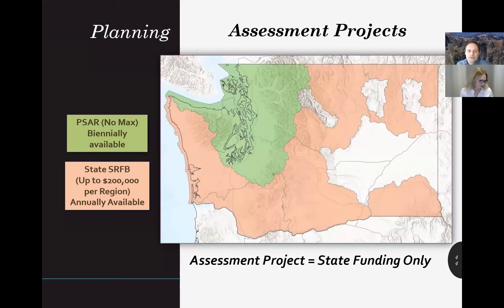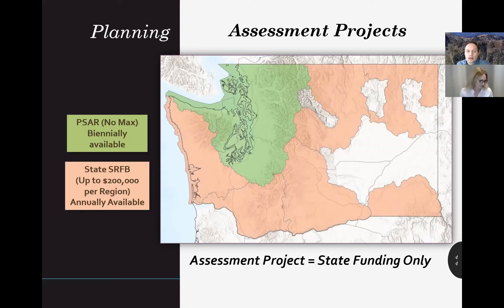Assessment projects that do not result in a site-specific design are only eligible for state funding. In the Puget Sound and Hood Canal areas, assessment projects must use PSAR funds. Since new PSAR projects are only available in even-year grant rounds, check with your local lead entity to determine if they have any available unallocated PSAR funds from a previous biennium before applying in an odd year — more than likely, plan to submit assessment-only projects in even-year grant rounds only. Outside Puget Sound and Hood Canal, state surfboard funding may be used for assessments annually, but each region is subject to a $200,000 cap for all assessments in any given year. Regions may submit more than one project, but the total amount not including match may not exceed $200,000.